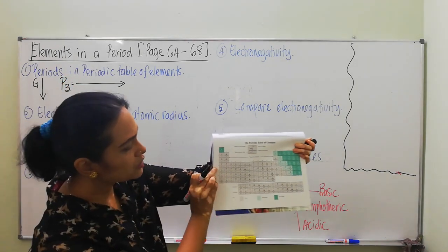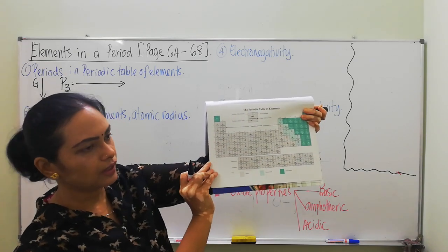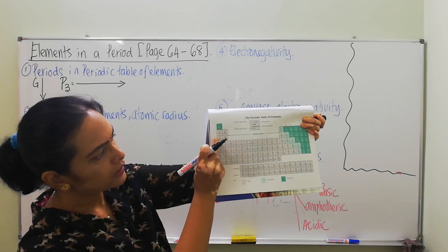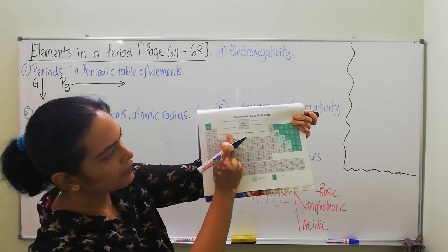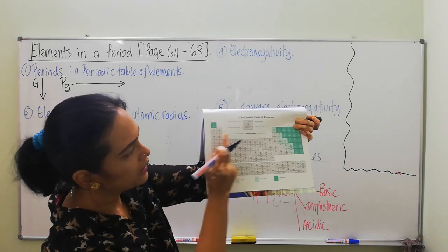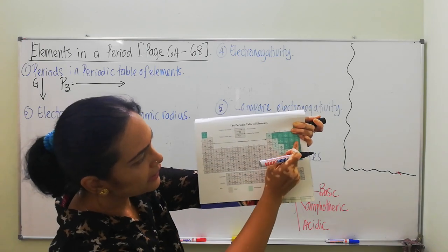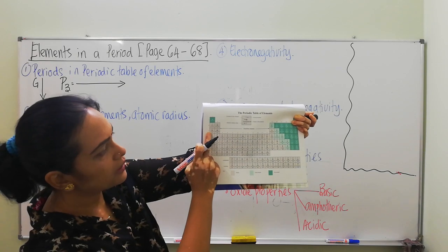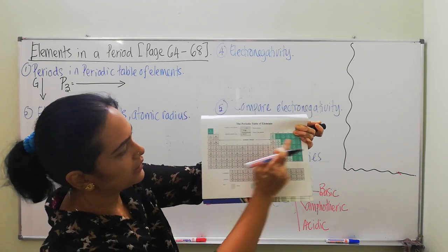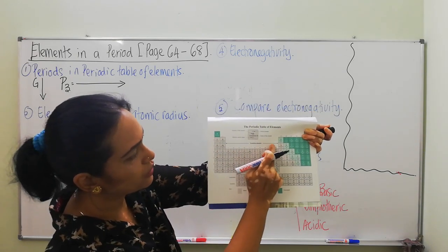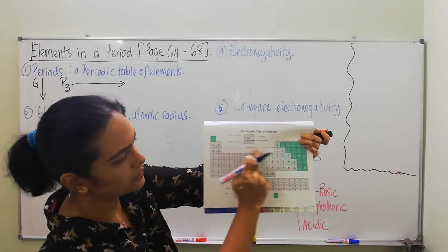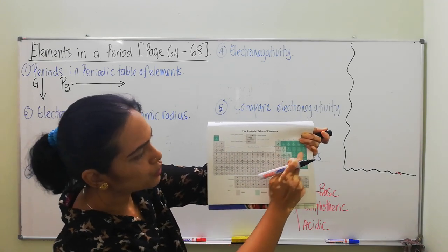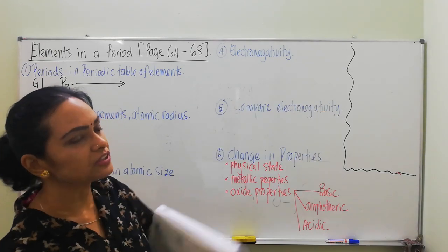If you look at period 3, you will find the elements starting from sodium and ending with argon. Starting from sodium, ending with argon — these are the elements in period 3, even though there are no elements in between those shown. From sodium up to argon, these are the elements in period 3.